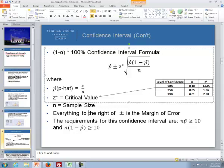Everything to the right of the plus or minus sign is the margin of error, and the requirements for the confidence interval are the sample size times our sample proportion is greater than or equal to 10, and our sample size times 1 minus the sample proportion, if that's greater than or equal to 10, then our requirement is met.